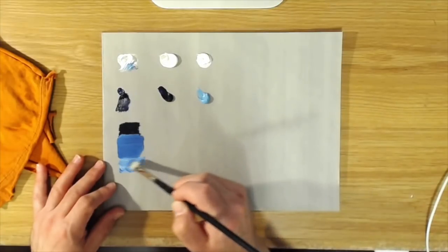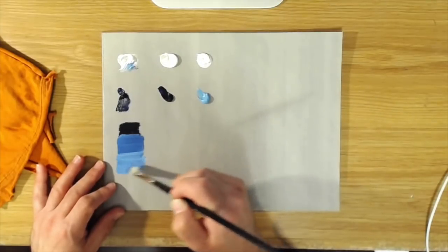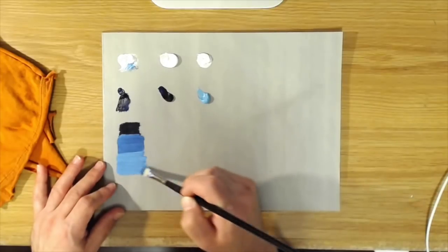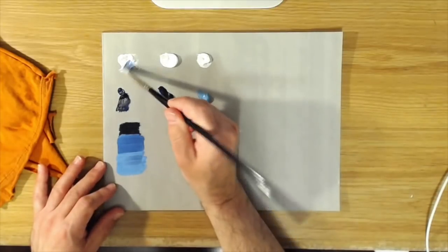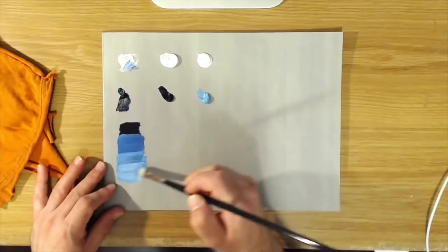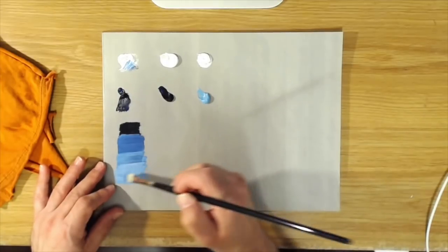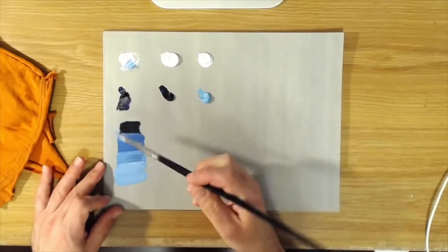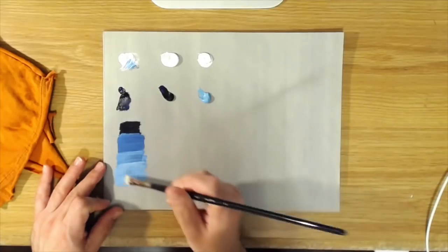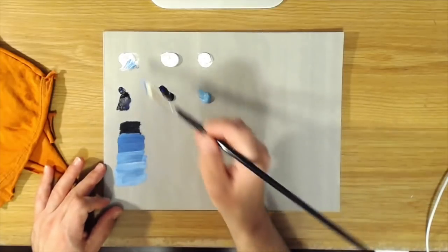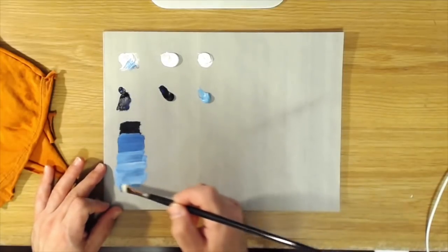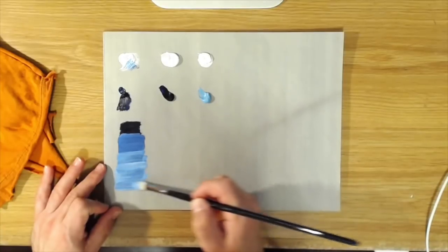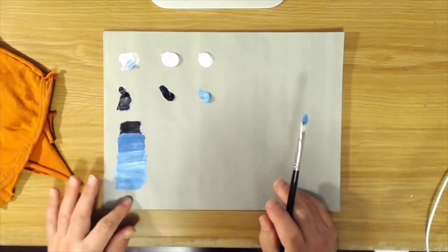Like I said, this color became very popular because it could be produced very cheaply in the 1700s. So for a long time, until cobalt blue came along in the 1800s, Prussian blue was the big inexpensive replacement for lapis lazuli.